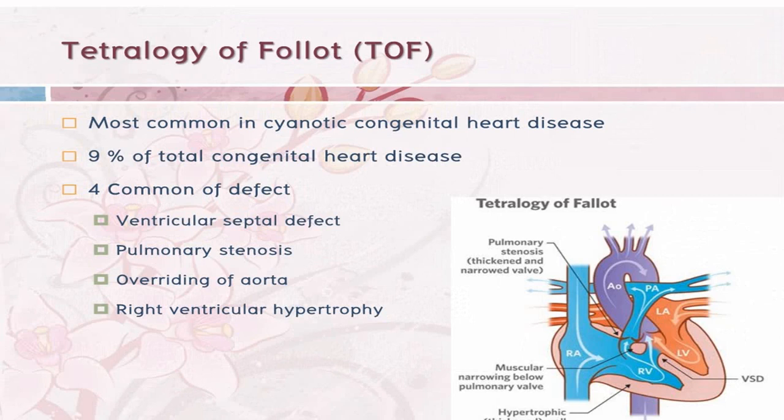It is the most common cyanotic congenital heart disease, accounting for nearly nine to ten percent of all congenital heart disease. The most common congenital heart diseases overall are ASD, VSD, and PDA, of which VSD is the most common.